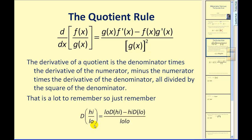Now there is a lot to remember, but here's a catchy phrase to help you remember the quotient rule. If you call the numerator the high function and the denominator the low function, you can say the derivative would be equal to low d high minus high d low, all over low low. If you got creative, I'm sure you could make a short song out of that, but I'll leave that to you.